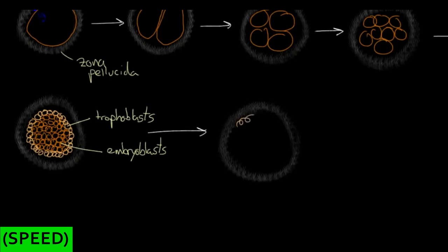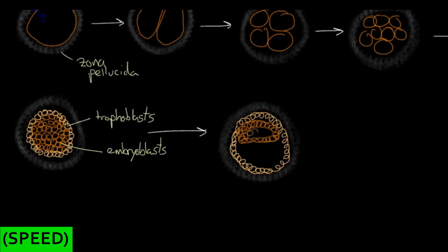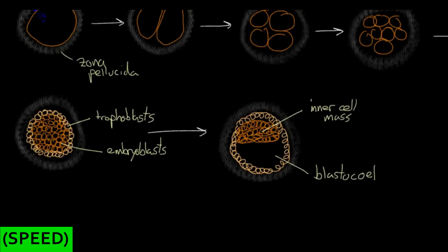We'll draw our zona pellucida here and draw all of our trophoblasts along the outside. Another interesting thing is happening to those cells in the middle — they're starting to clump even more. In fact, they clump so much that they all cluster at one end, leaving a little cavity on the other end. Here you can see your trophoblasts and your embryoblasts, also called the inner cell mass. That cavity is called a blastocoel. This structure with a blastocoel and an outer ring of trophoblasts is called a blastocyst.